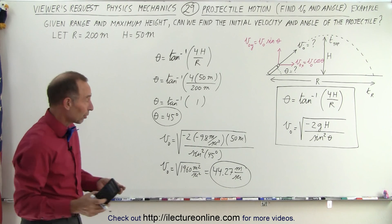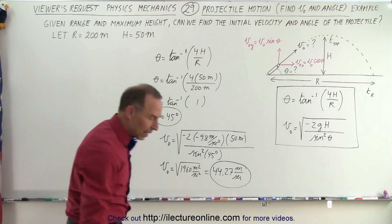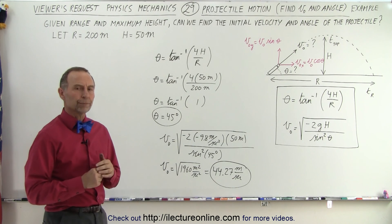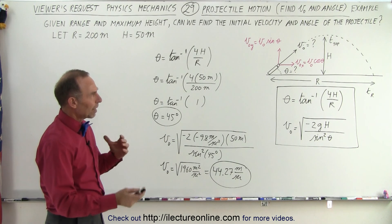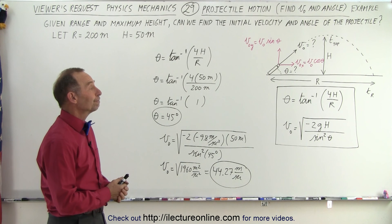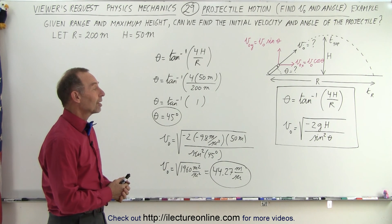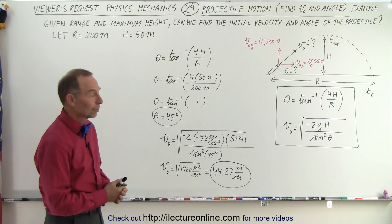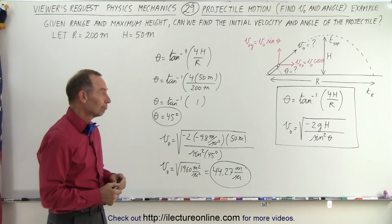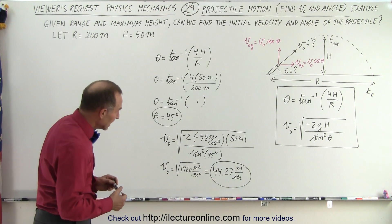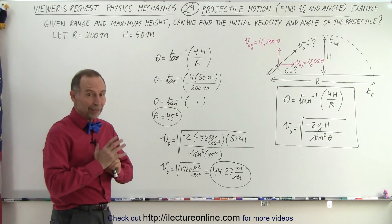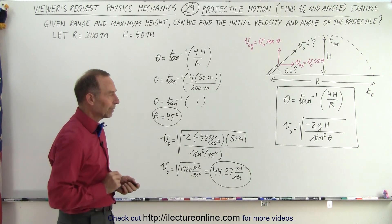So at least it works for those two values. Now is there ever a point where it wouldn't work? Is there ever a combination of range and height that could physically not be obtained? Well, you have 45 degrees so that's when we get maximum range — regardless of v-initial, that's when you get maximum range. But are there some combinations of range and height that are simply not possible?